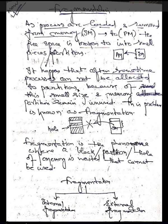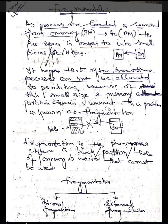After some time, a process cannot be allocated to a partition because of the small size, and memory partitions remain unused. This problem is known as fragmentation. Once a process is moved, that particular portion remains unused because that particular process cannot occupy that space. This problem is known as fragmentation.